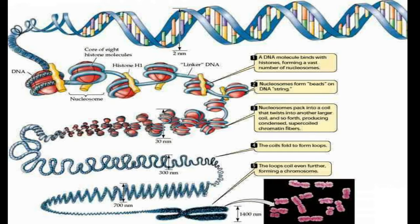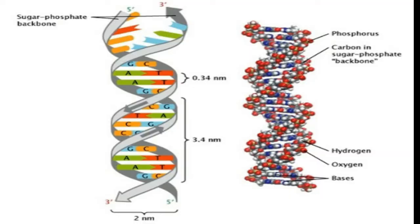Nucleosomes further coil and super coil extensively and finally form chromosomes. In DNA, two helices run in the 3' to 5' direction oppositely in an antiparallel way, forming a solenoid of 20 angstrom or 2 nanometer diameter. Each helix is held together with specific base pairing: adenine of one strand pairs with thymine of another strand, and cytosine of one strand pairs with guanine of another strand.